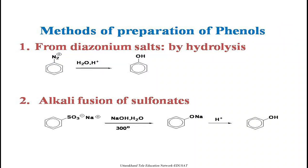Next topic is the methods of preparation of phenols. The first method is from the diazonium salt. The hydrolysis of a diazonium salt in the presence of dilute acid — which can be HCl or sulfuric acid — results in phenol.